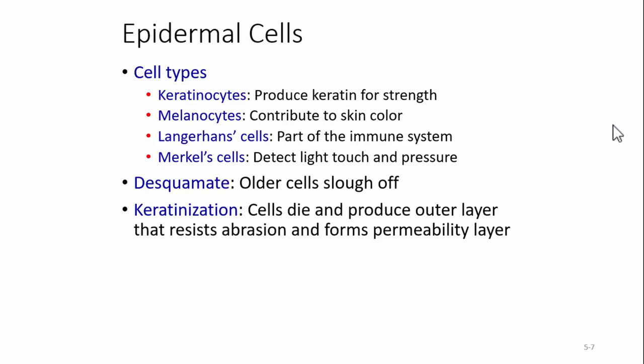The term 'desquamate' means older cells slough off, and we are constantly sloughing off old cells. As a matter of fact, your mattress gets heavier over time because of the collection of dead skin cells. Keratinization is when cells die and produce an outer layer that resists abrasion and forms a permeability layer — for abrasion resistance and to hold some things in like moisture and keep things out. There's also a third function: the sloughing of skin cells helps reduce bacteria that build up on the skin, which becomes dust floating in the air.